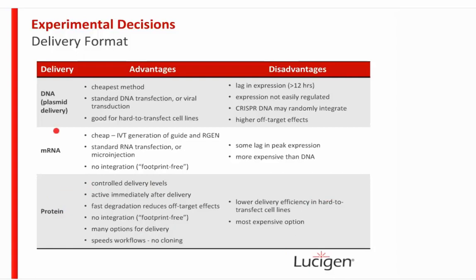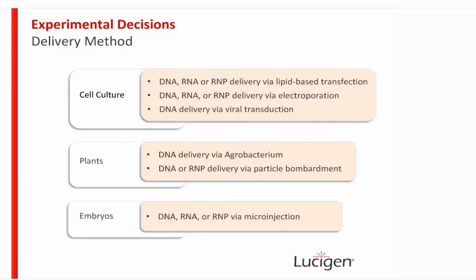Your delivery method depends on the system you're working in. In cell culture you have options including lipid-based transfection, electroporation, or viral transduction. In plants, DNA delivery is typically done via Agrobacterium transformation, though RNP delivery is also possible for reducing off-targets. With embryos, a typical delivery method is microinjection.